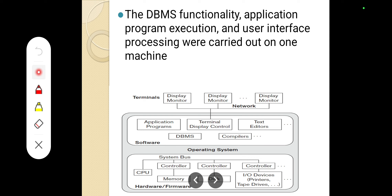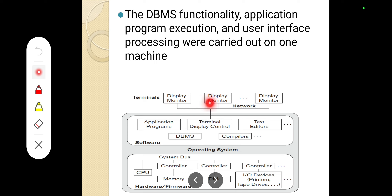The DBMS functionality, application program execution, and user interface processing were all carried out in one central machine. The display part is handled by the display monitors or display clients. These display clients are connected to the database server or central computer system using a network. When a terminal wants to get information, it goes directly to the DBMS and gets the information and displays it.